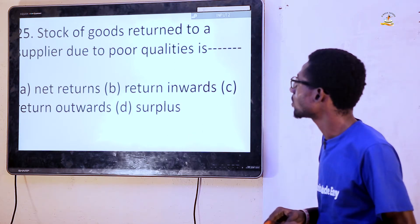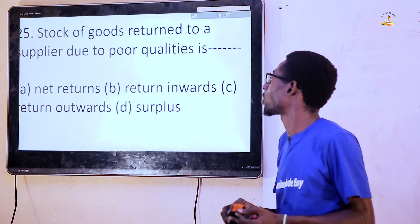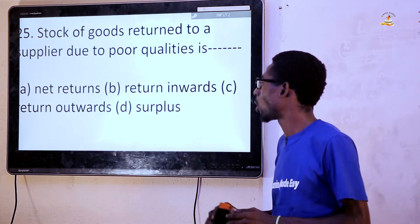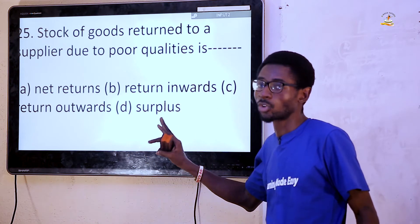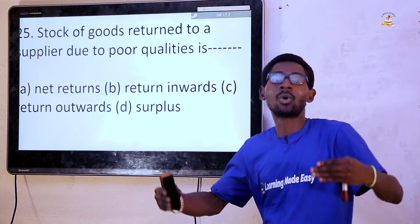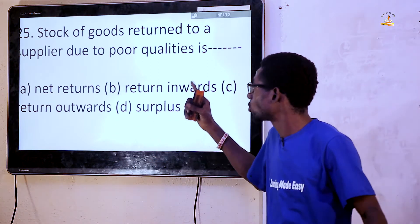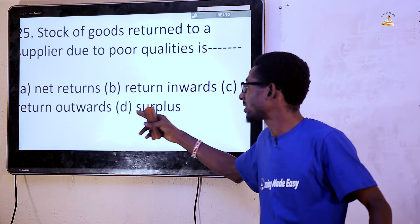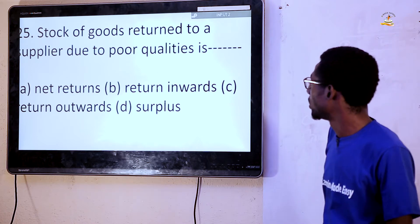Question 25: Stock of goods returned to a supplier due to poor quality is called returns outward. It is from the business to the supplier. Returns inward is from the customer to the business. In this case, it is the business taking goods back to the supplier, so the answer is returns outward, which is option C.